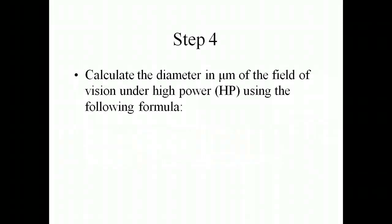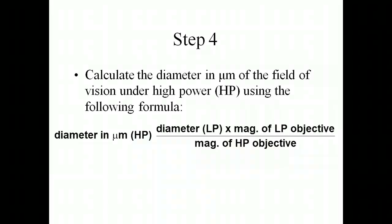Once we know that, we can calculate the diameter in micrometers of the field of vision under high power using the following formula. We're going to set up a ratio or proportion because if we know that it's 1,200 micrometers under 100x, and we know our high power field is 400x, we can simply figure out what the diameter would be under high power. We want to figure out the diameter under high power, so we need to take the low power, the diameter that we just figured out for low power, times the magnification of our low power objective lens, and then divide it by the magnification of our high power.